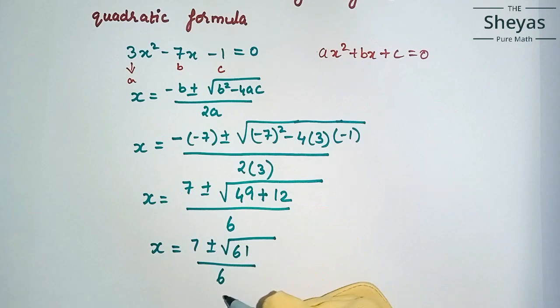49 plus 12 is root 61, so 7 plus or minus root 61 by 6.